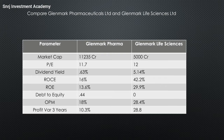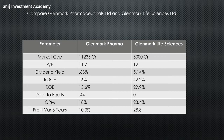ROE for Glenmark Pharma is 13.6%, while Glenmark Life Sciences is 29.9%. The debt-to-equity ratio for Glenmark Pharma is 0.44, whereas Glenmark Life Sciences is 0 — meaning it is a debt-free company. OPM is 18% for Glenmark Pharma and 28.4% for Glenmark Life Sciences. Profit margin is 10.3% for Glenmark Pharma and 28.8% for Glenmark Life Sciences.